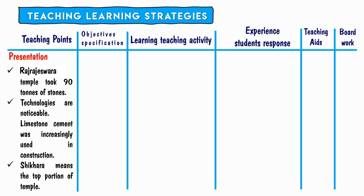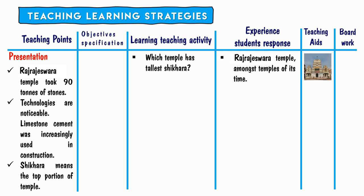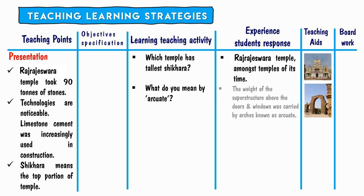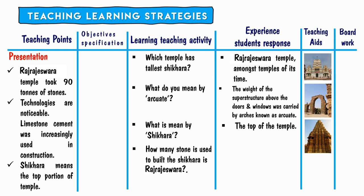The Rajarajeshvara temple took 90 tons of stone. Notable technologies include the increasing use of limestone cement in construction. Shikhara means the top portion of a temple. The teacher asks: 'Which temple has the tallest shikhara?' — 'The Rajarajeshvara temple has the longest shikhara among temples of its time.' 'What do you mean by arch weight?' — 'The weight of the superstructure above doors and windows was carried by arches, known as arch weight.' The teacher shows charts and models; students observe them.